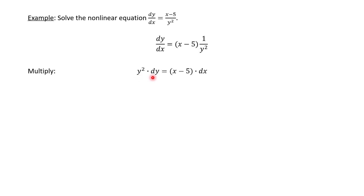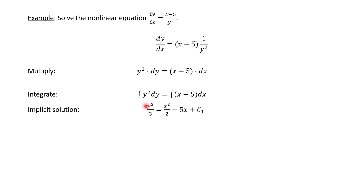At this point we have a nice setup where everything that depends on y is on one side of the equal sign and everything that depends on x is on the other side. Then we just integrate both sides. Integrating with respect to y, we get y cubed over 3. Integrating with respect to x, we get x squared over 2 minus 5x, and don't forget our constant from integration. This is our implicit solution.